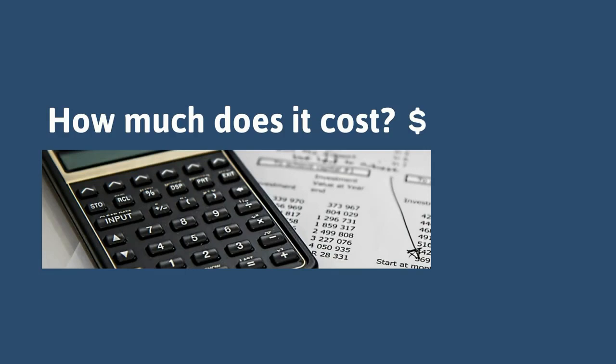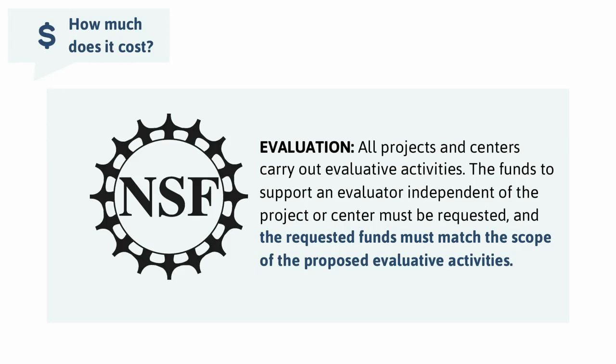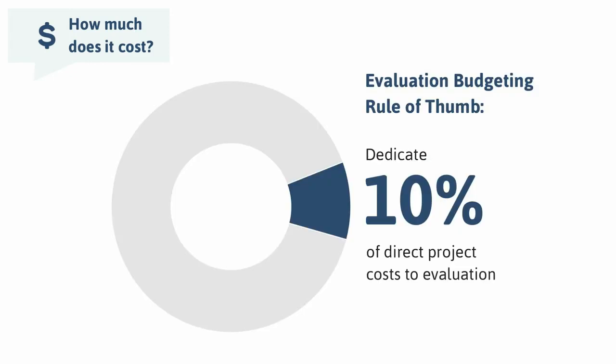Let's get to the burning question of how much does an evaluation cost. Here's an excerpt from the ATE program solicitation: the evaluation budget must match the scope of the proposed evaluative activities. The general rule of thumb is that 10% of your project's direct cost should be allocated for evaluation. That's a good place to start, but you can go up or down from there depending on what level of evaluation is needed for your project.